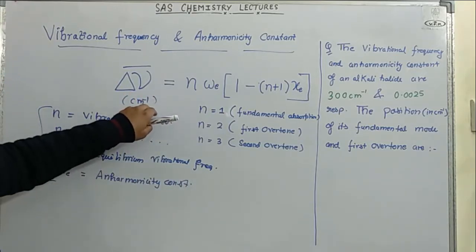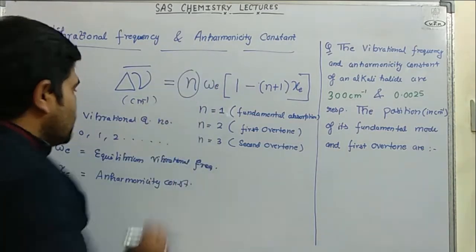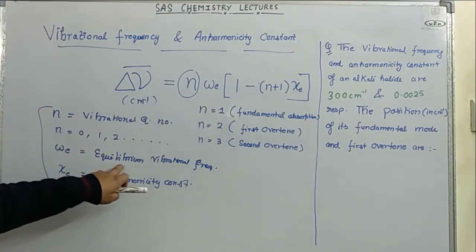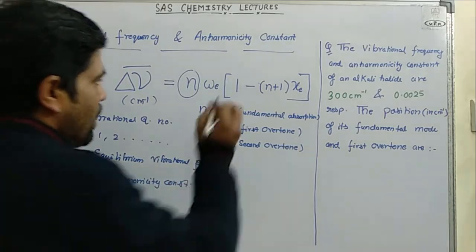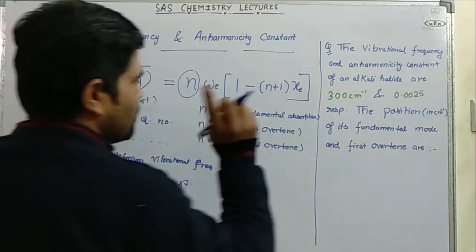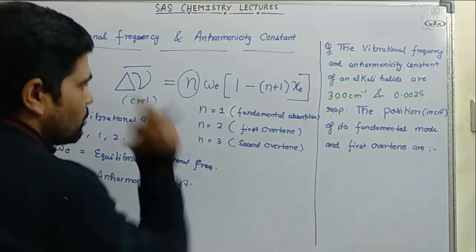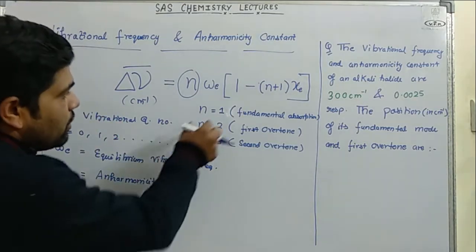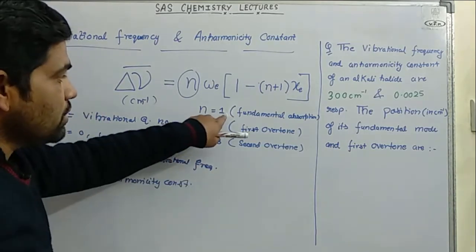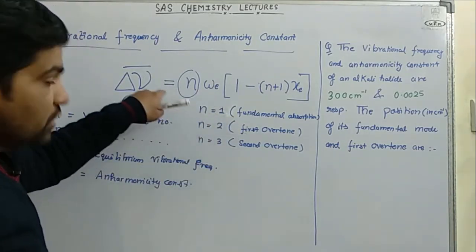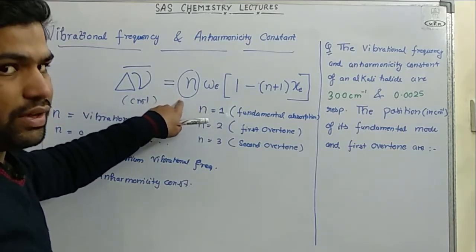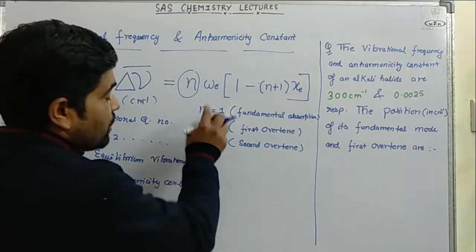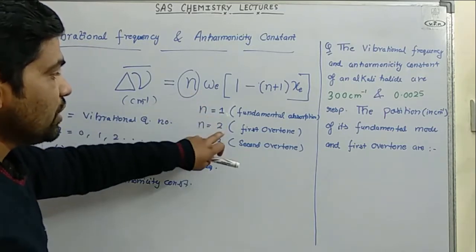The formula comes in centimeter inverse. Here n is the vibrational quantum number, omega_e is the equilibrium vibrational frequency, and x_e is the anharmonicity constant. Note that in this formula the value of n starts from 1. This is a tricky formula I have derived according to my approach.